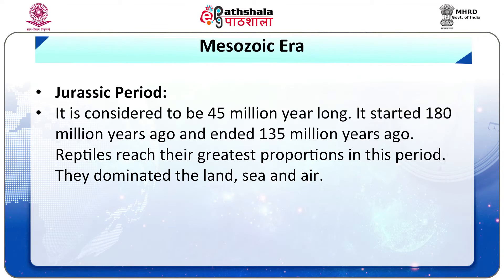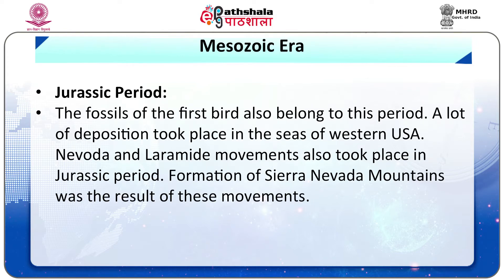The Jurassic period is considered to be 45 million years long. It started 180 million years ago and ended 135 million years ago. Reptiles reached their greatest proportions in this period — they dominated the land, sea and air. The fossils of the first bird also belonged to this period. A lot of deposition took place in the seas of western USA. Nevada and Laramide movements also took place in the Jurassic period. Formation of the Sierra Nevada mountains was the result of these movements.